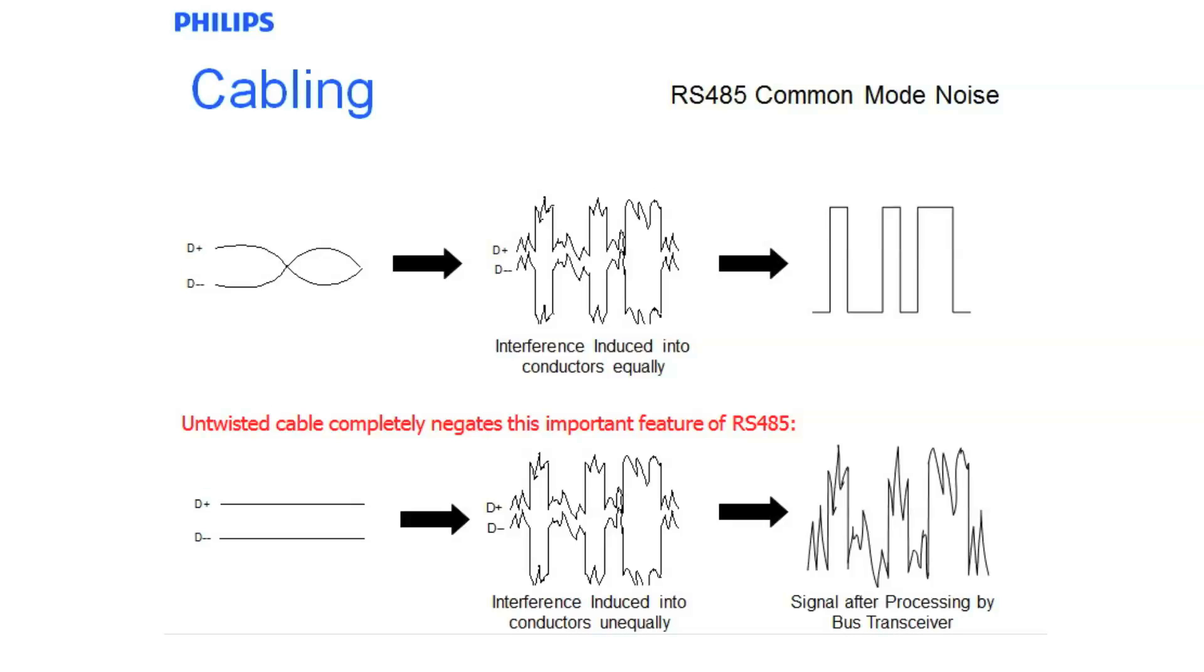If you use an untwisted cable such as a security cable, you will have different cable lengths in between the two and different lots of noise being induced into those two conductors. So when you do induce noise, the end result is after it's gone down the transceiver, you will still have a lot of noise which inherently makes for a bad network. That is why we use twisted pair networks.